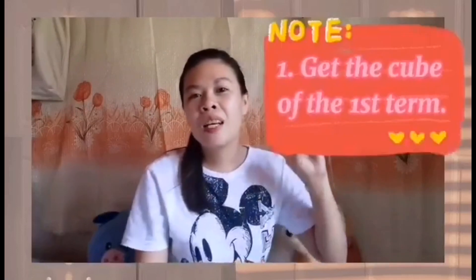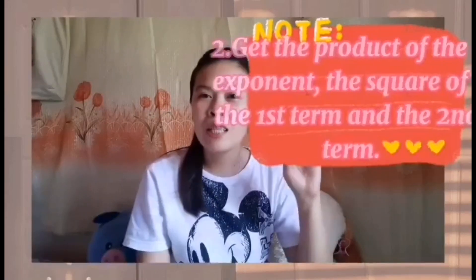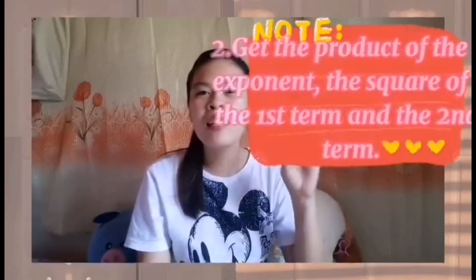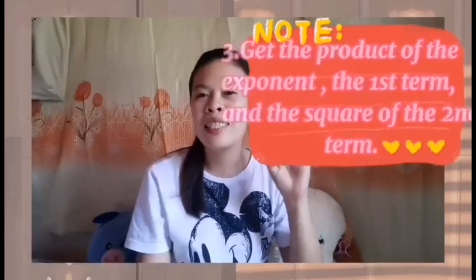Okay math lovers, finally we're done with our topic for today's vlog. Now let us have the recap on how to get the product of a cube of a binomial. First step: get the cube of the first term. Second step: get the product of the exponent, the square of the first term, and the second term. Third step: get the product of the exponent, the first term, and the square of the second term. And for the last step, get the cube of the second term. So four easy steps, math lovers. If you repeat it and repeat it, you will be able to answer a certain cube of a binomial in just four seconds.